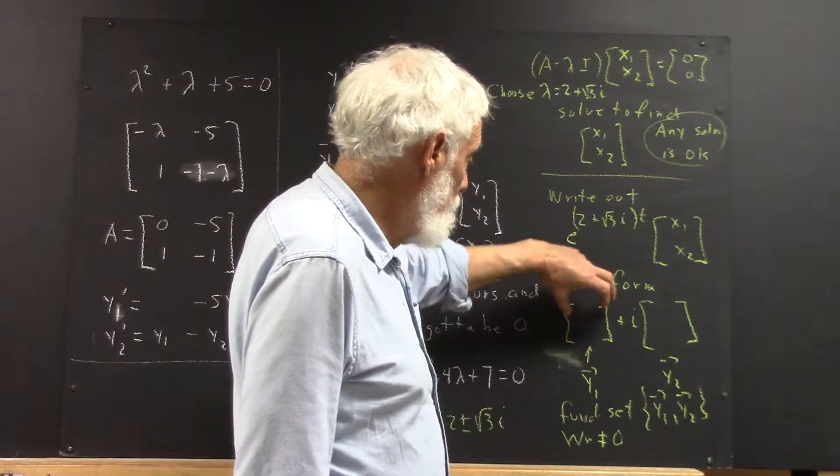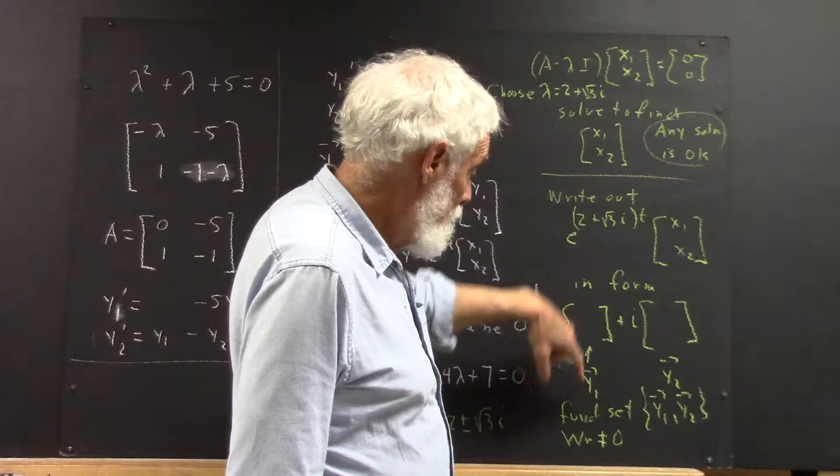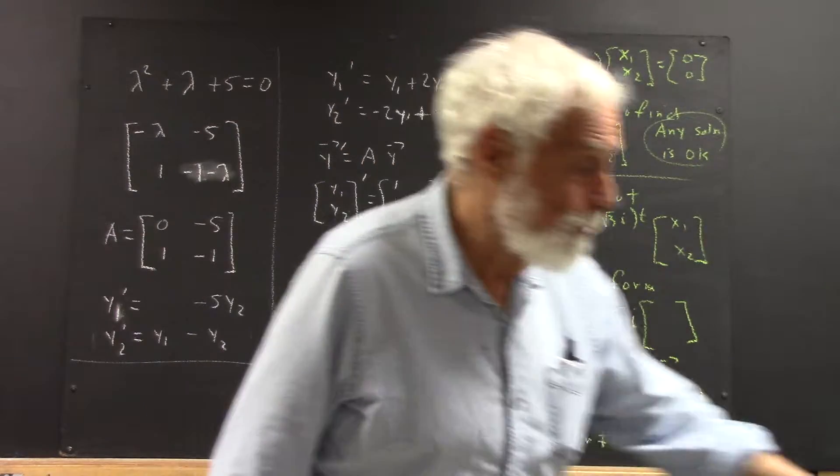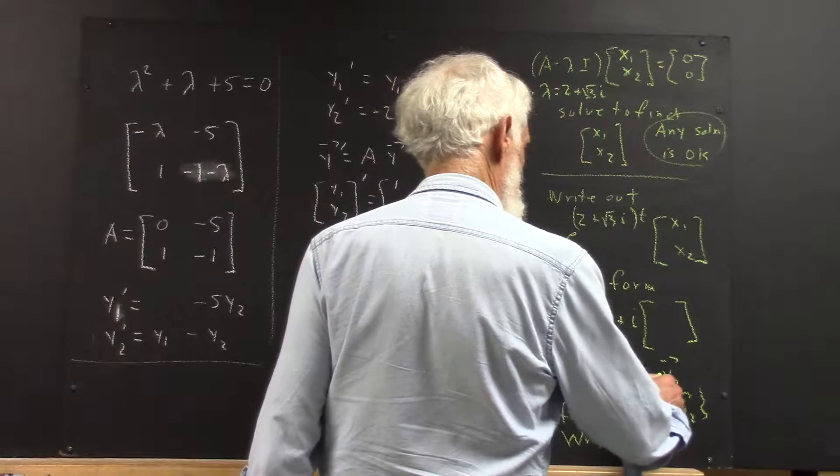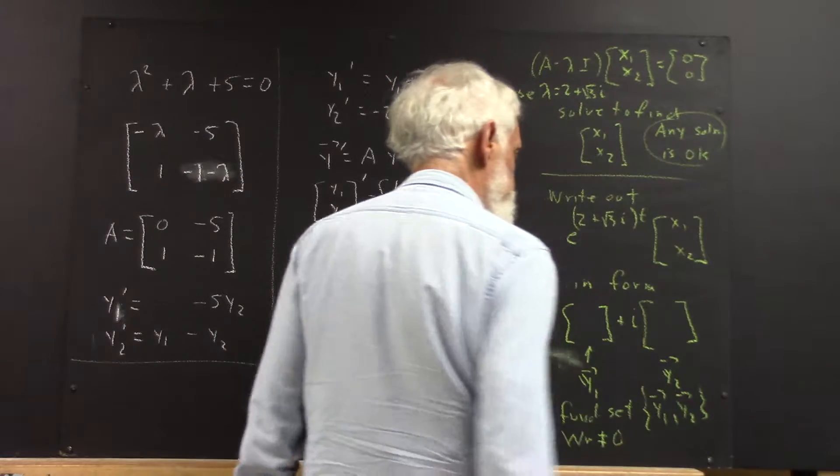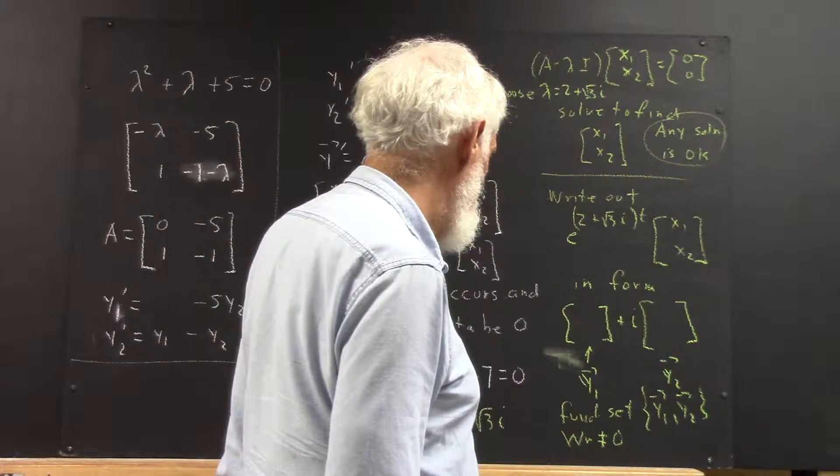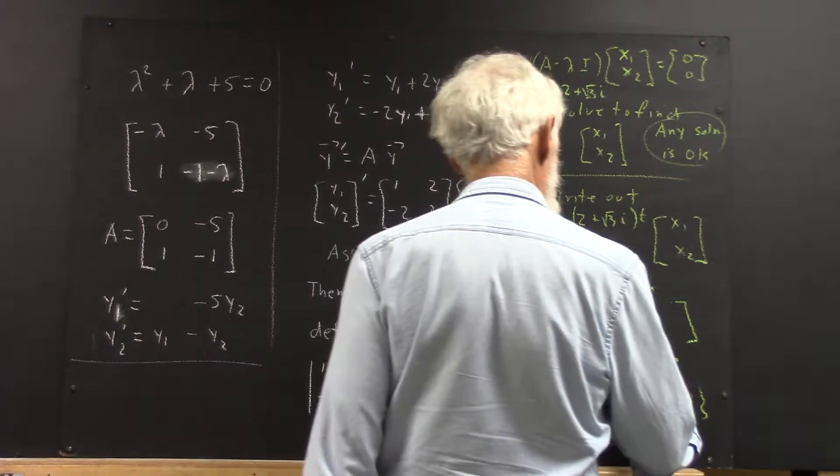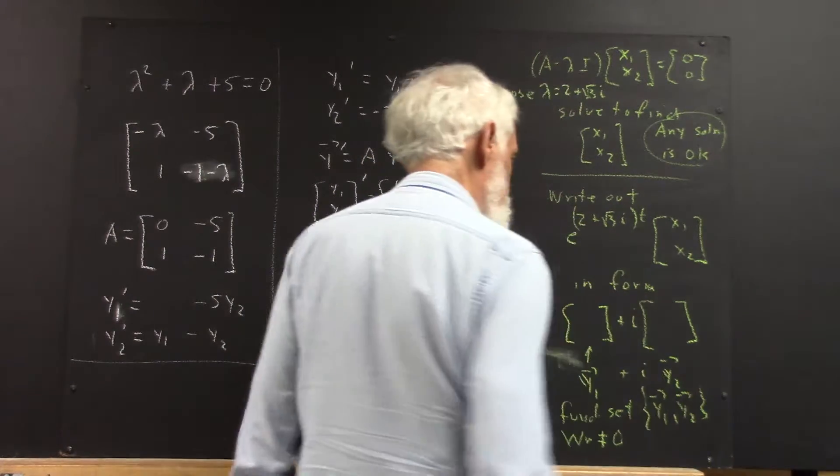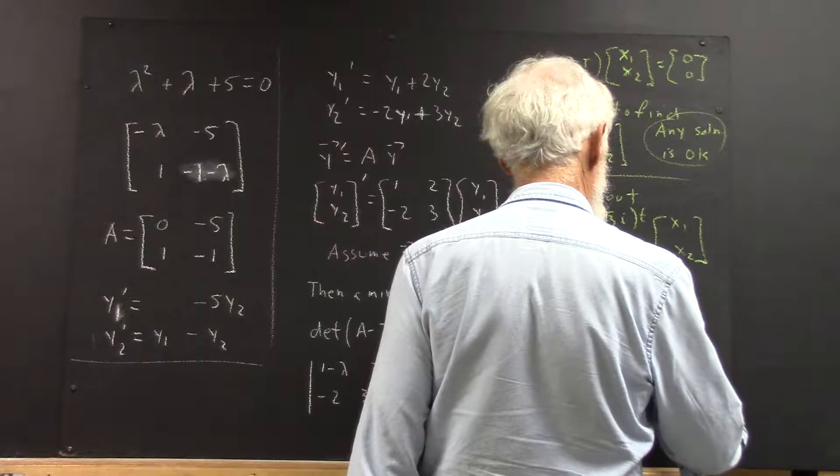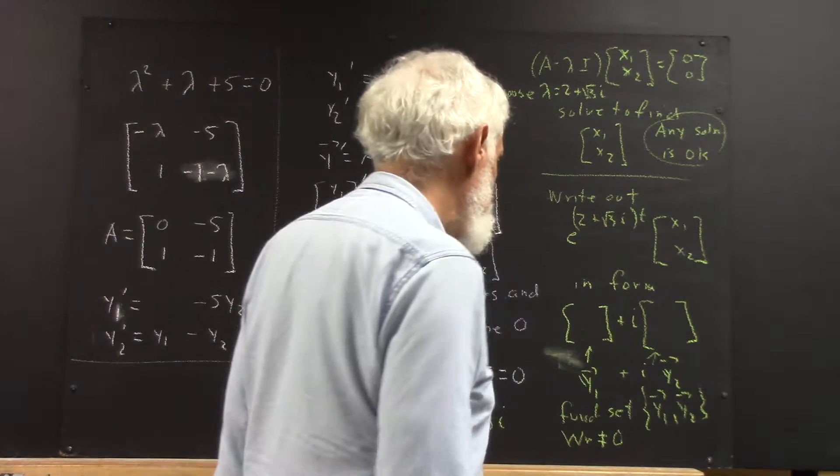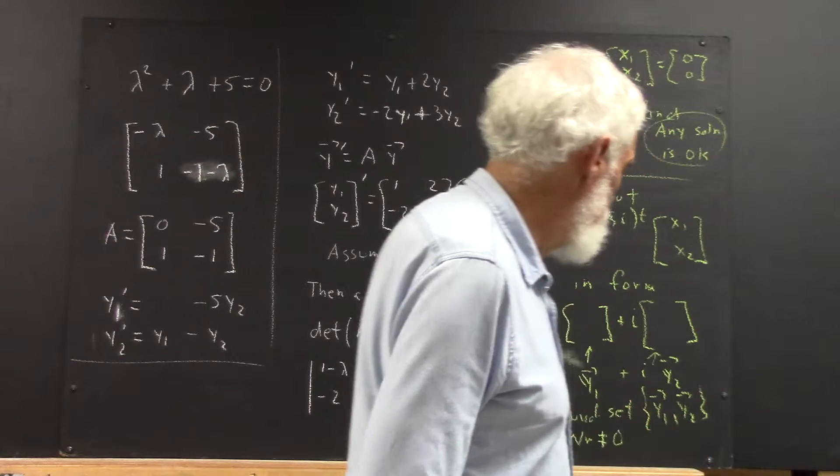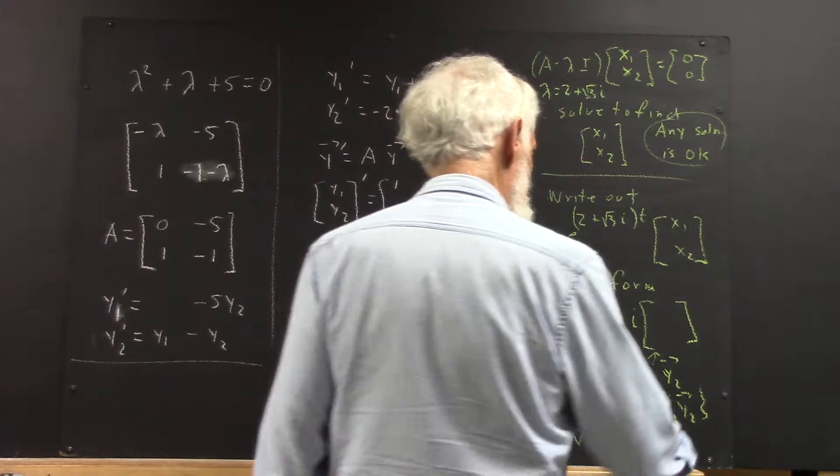And you put that in the form real big fancy y1, and a big fancy y2 times i. And our fundamental set's y1, y2, both big fancy.